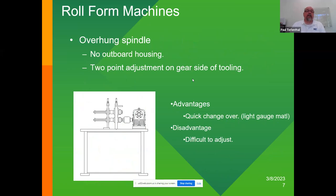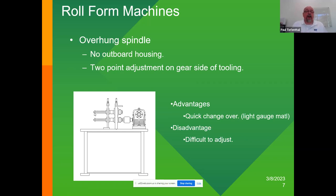The overhung spindle machine has no outboard housing — the tooling is placed on the shaft with a spacer on the outside. We call this overhung because there's no support on the outside; you have a two-point adjustment on the backside of the tooling on the gear side. The advantage is you can change tooling much quicker — you pull a bolt, screw, or nut depending on the manufacturer and slide the tooling off. The disadvantage is it can be difficult to keep in adjustment and get everything balanced, since you're not adjusting on each side of the rolls.